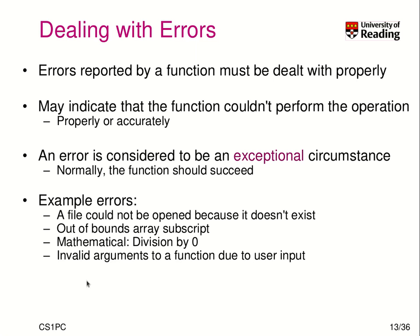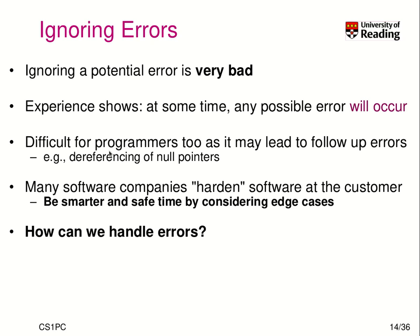There are many types of errors to cover. It's very bad coding if you ignore a potential error, because at some time someone trying to execute your code will encounter such an error. That's still the problem with many products — exceptions are not dealt with in all cases. It's sometimes difficult to handle errors properly, particularly when you ignore an error it may cause follow-up errors that are hard to spot. For example, you try to dereference a null pointer, accessing a null object, when it should have aborted long before when you tried to create that object. Many software companies still harden software at the customer. Considering edge cases and encoding them in your source initially saves a lot of debugging time.